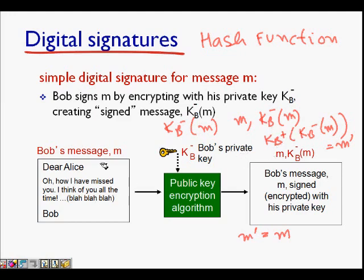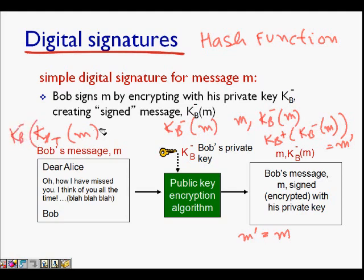If M-dash is equal to M, it means it was encrypted by Bob. So all three properties hold: Alice can verify it was Bob who sent the message; it cannot be forged, because no other person like Trudy can encrypt a message such that decrypting with Bob's public key gives M; and later Bob cannot repudiate saying he had not sent the message.